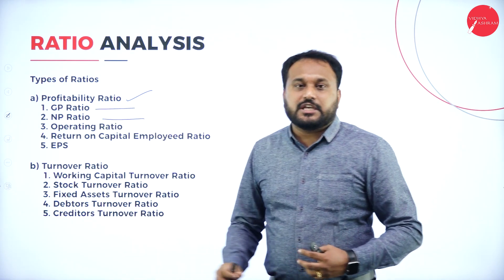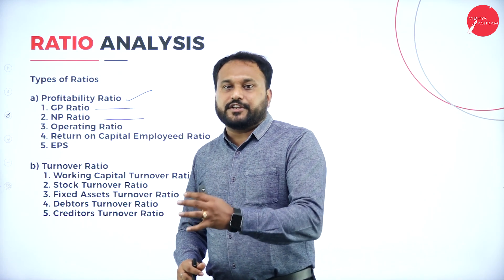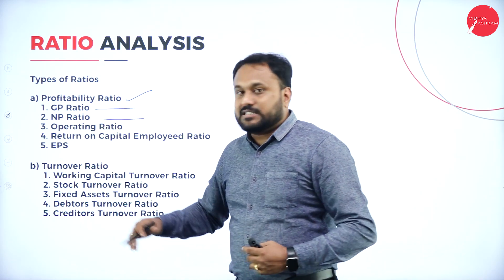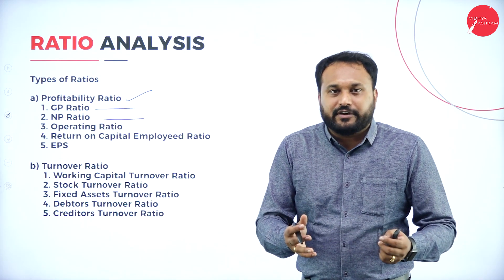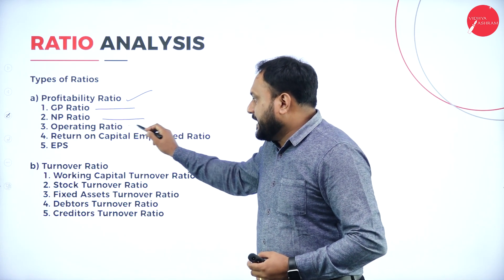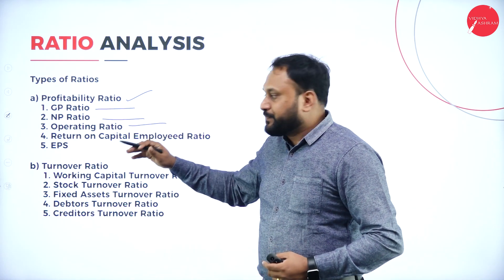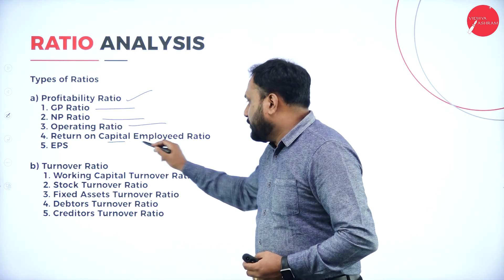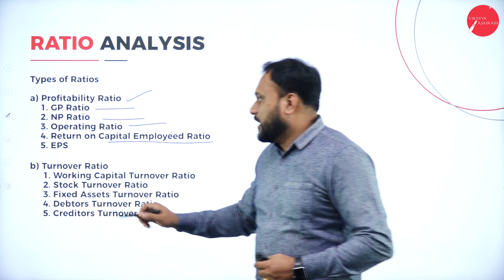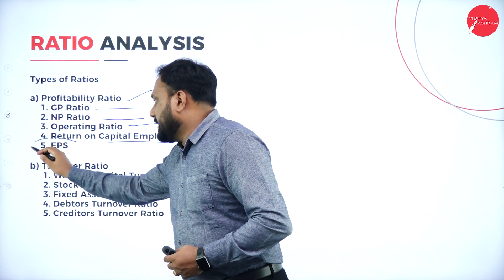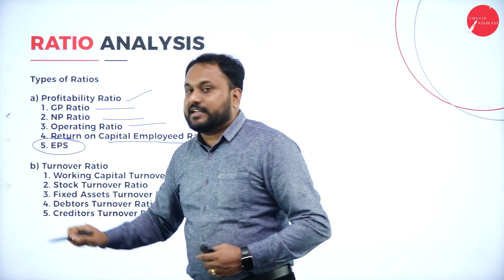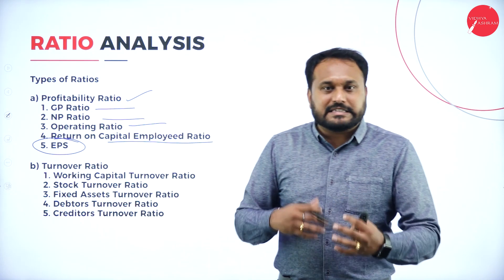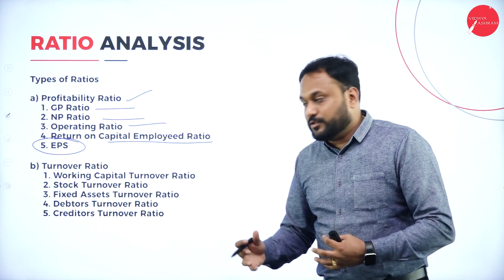GP ratio is the Gross Profit ratio. NP is the Net Profit ratio. You also get Operating ratio, Return on Capital Employed ratio, and EPS — Earning Per Share — which you have already studied. So you know what exactly you are supposed to do.